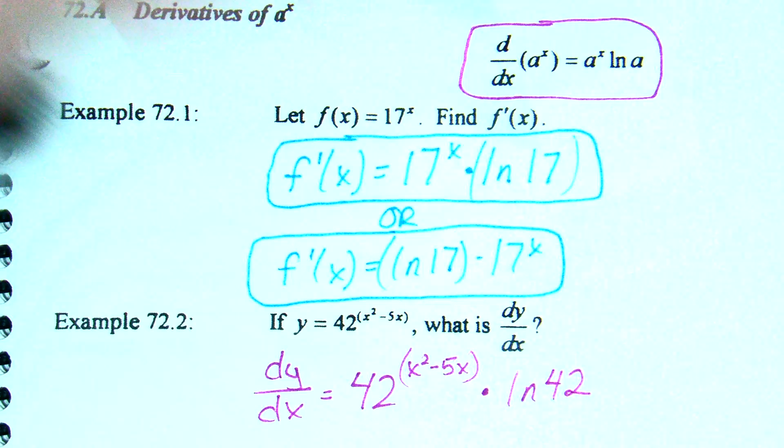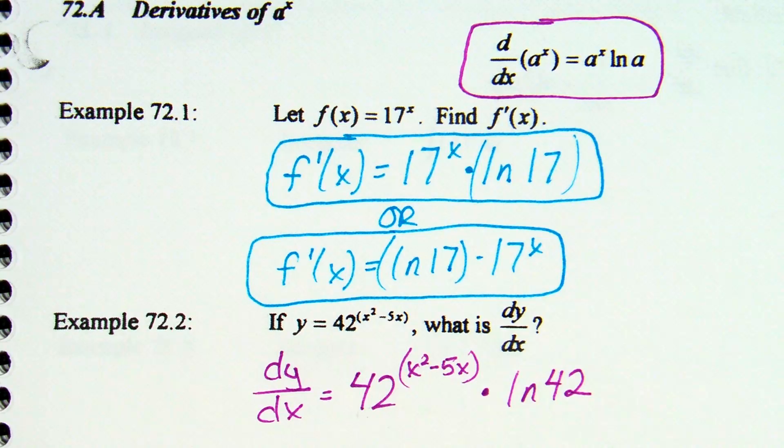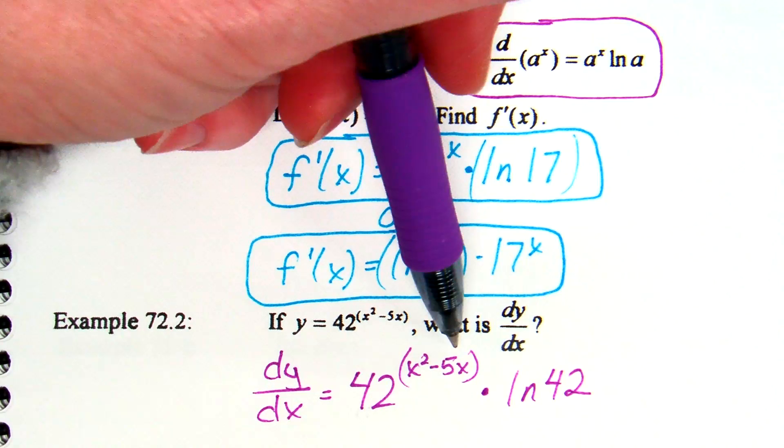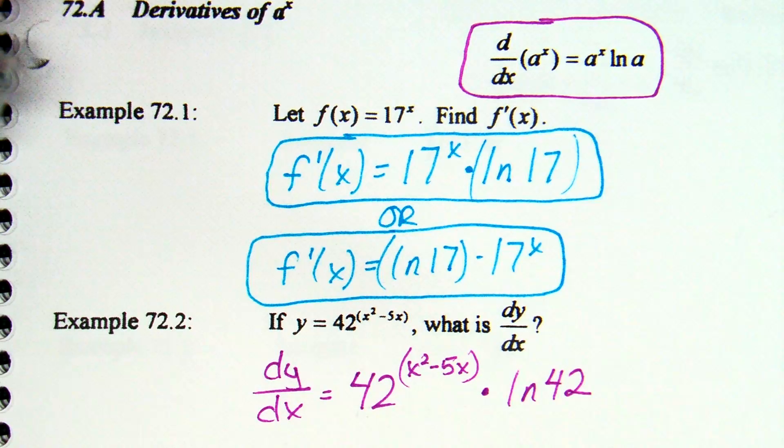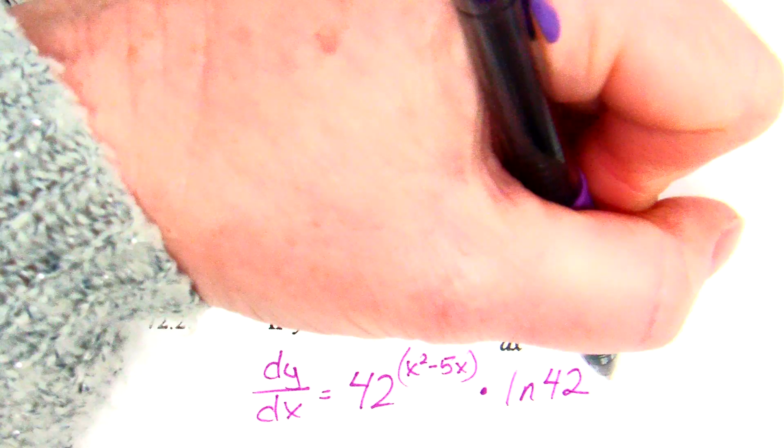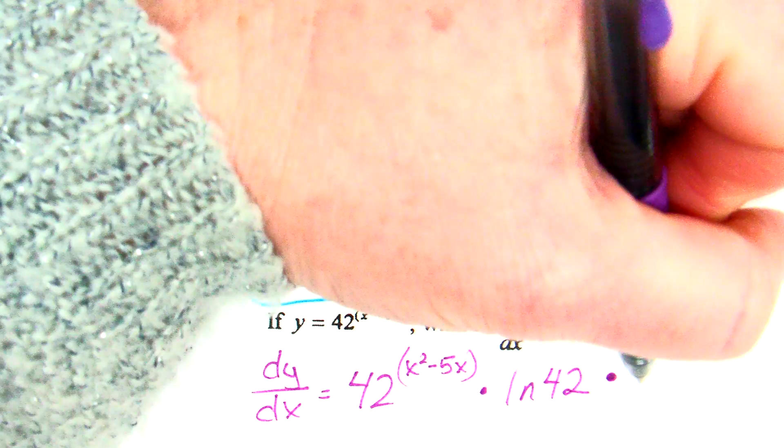And then what's different about this one? Yeah, the x squared minus 5x is not just an x. So, technically when it was just an x, the derivative of x is 1. So, we don't have to worry about this one. But, this one we have to think what's the derivative of x squared minus 5x. So, what's the derivative of x squared minus 5x? 2x minus 5. I'm going to put that in parenthesis over there. So, those are your pieces.